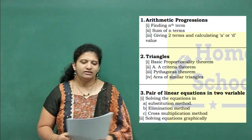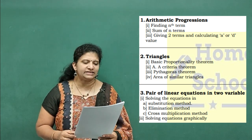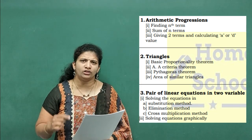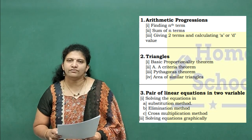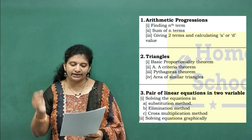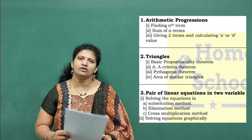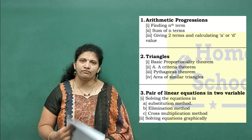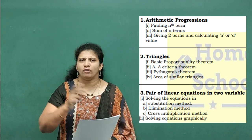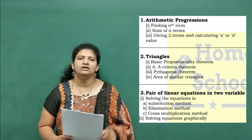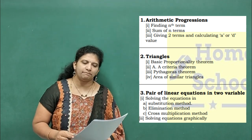So what is there in this paper? You can look over this paper. The first chapter is Arithmetic Progression — finding the nth term, sum of n terms, and giving two terms and calculating 'a' or 'd'. These are the three concepts: nth term, sum of n terms, and finding any value given 'a' and 'd'. Among these three, compulsory one two-marks question can be expected.